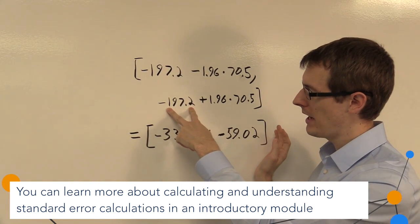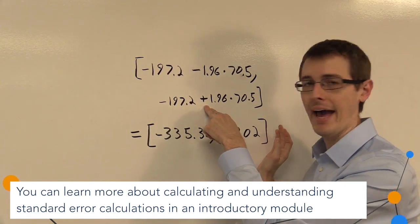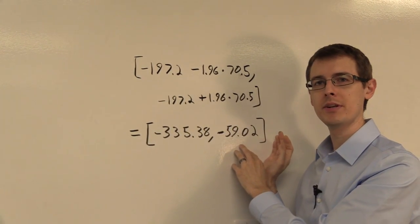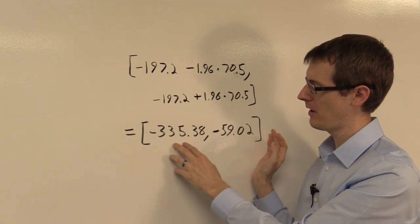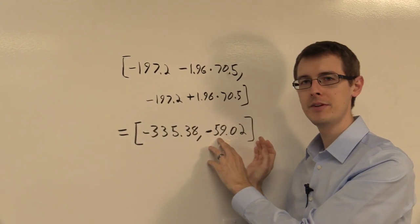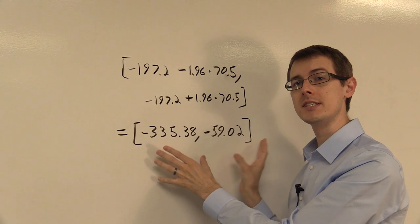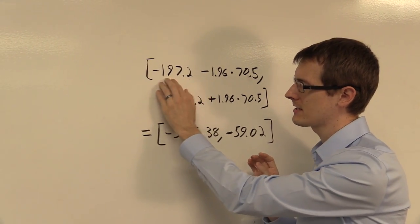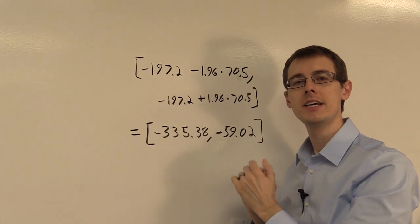Then this upper bound is the same thing, except we add 1.96 times 70.5. Doing the math, we get this confidence interval, minus $335 to minus $59. This interval does not contain zero, so we conclude that this effect, minus $197, is actually real.